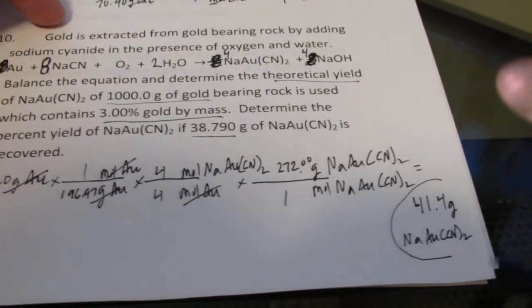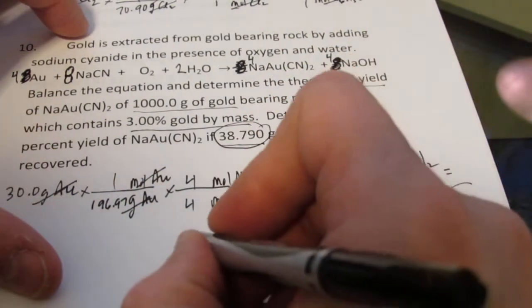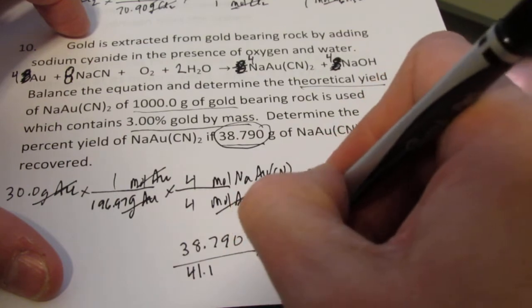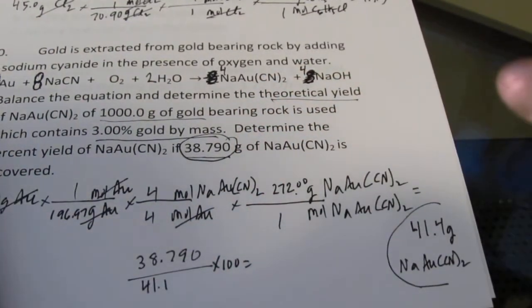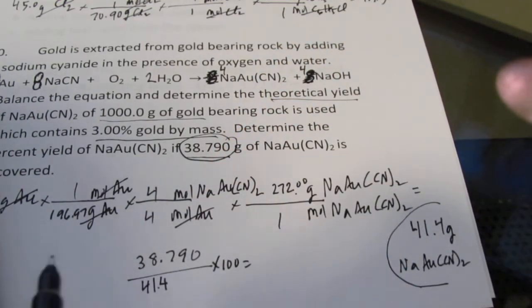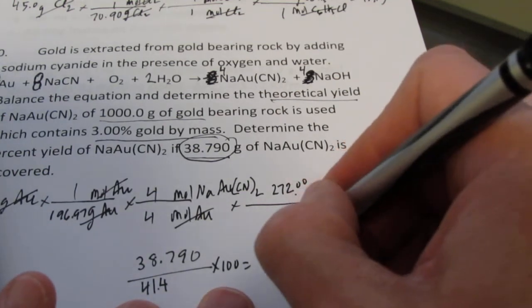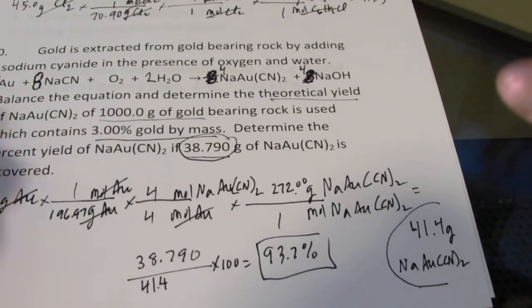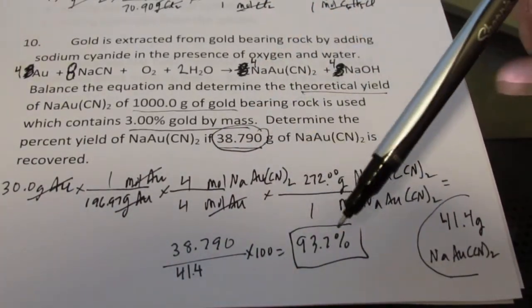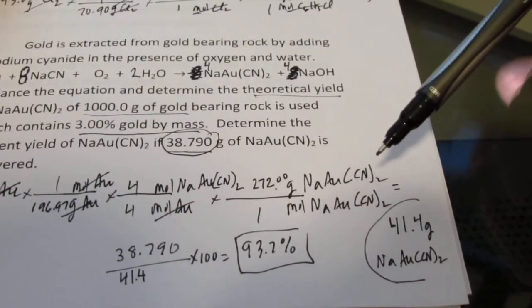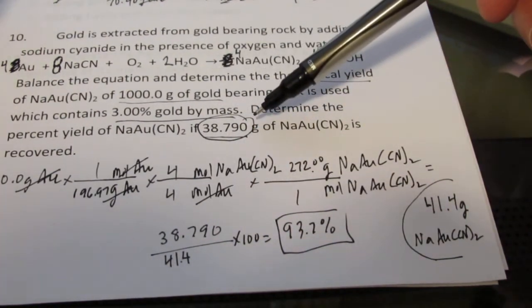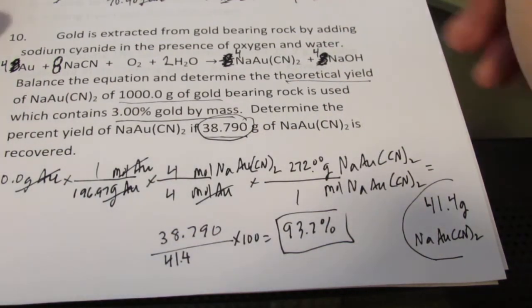Okay, now, is that how much I did produce? Nope, I only produced 38.790. So 38.790 out of 41.4 gives me a percent yield of 93.7%. So not too bad. Almost a 94% yield. So once again, this was basic stoichiometry with a little bit of percent yield on it at the end. I had grams of gold, I wanted to find grams of the sodium-gold-cyano complex. That would be my theoretical yield. And then I found my percent yield if I only gathered 38.79 grams of it. Ended up with almost a 94% yield.